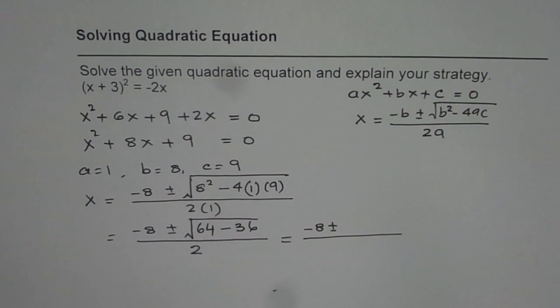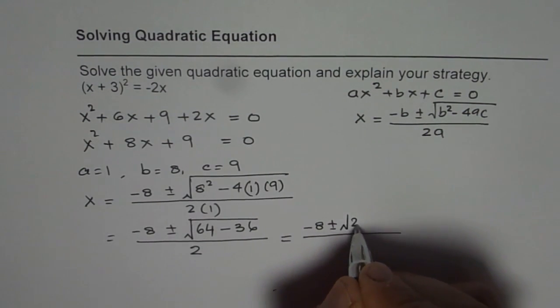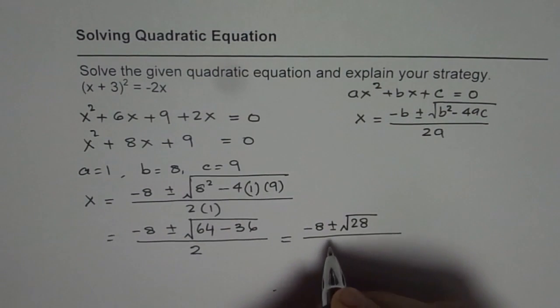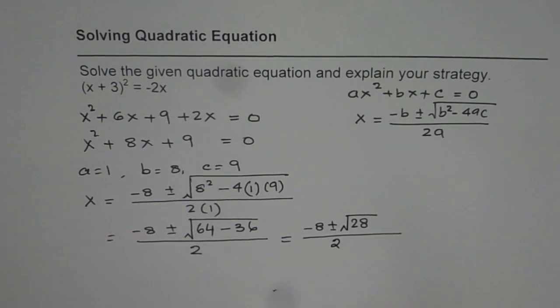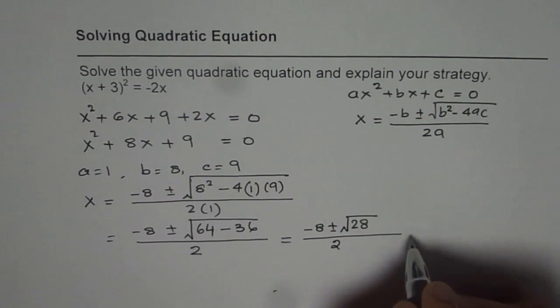So we have 64 minus 36 is equal to 28. So we have √28 divided by 2. Now in case of radicals, we like to keep them in radical form. 28 can be written as 7 times 4.